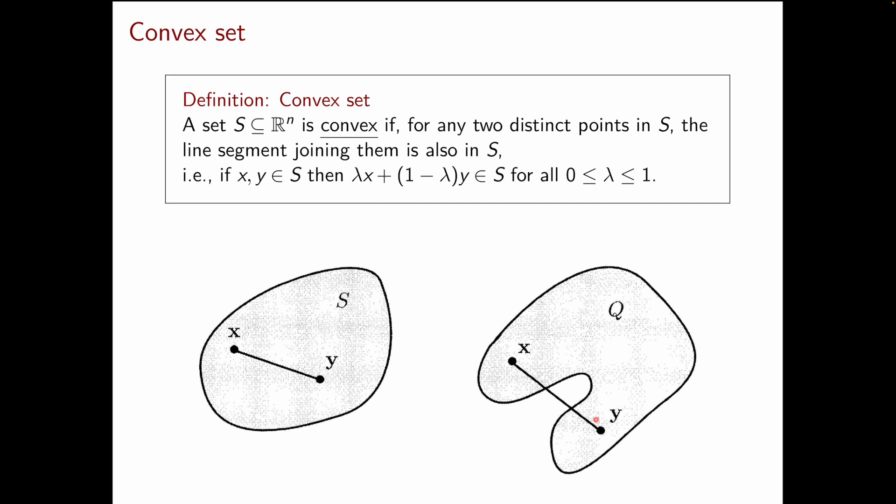On the other hand, let's look at the set Q on the right. If we pick X over here and Y over here, then you can immediately see that the line segment joining them is not fully contained in the set Q. Therefore, the set Q is not convex.